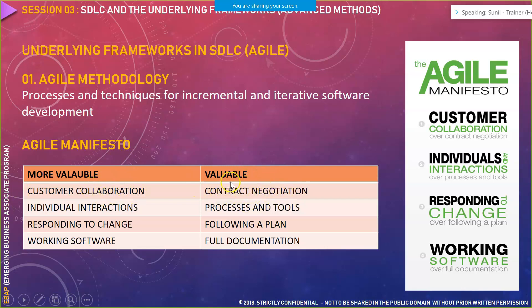In agile it's not like that. While the sprint — essentially a cycle of development — is going on, the customer can request a change or modification. We continuously collaborate with the customer. The first principle is: customer collaboration over contract negotiation. We always welcome change in an agile environment. We never say 'as per your contract you cannot request a change at this point.' We don't say that. We always welcome change.